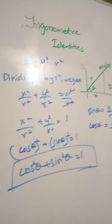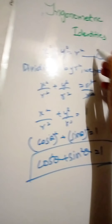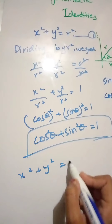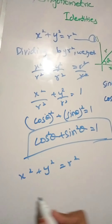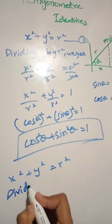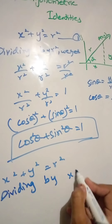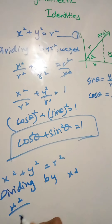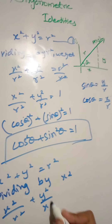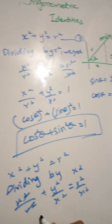Now we have the second identity proof, and now we have the first validation. x-squared plus y-squared equals r-squared. Let's divide by x-squared. So dividing by x-squared: x-squared by x-squared plus y-squared by x-squared equals r-squared by x-squared. So here we have the second identity proof.